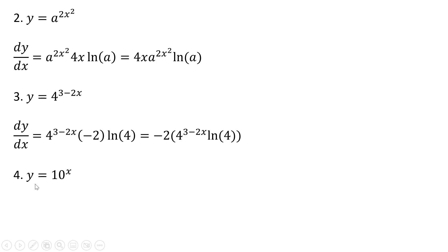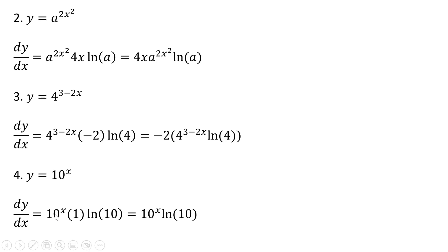Example four: y equals 10 raised to the power of x. We rewrite the original function. The derivative of x is 1. And then we take the natural log of 10. Multiplying that all together, we get the following result.